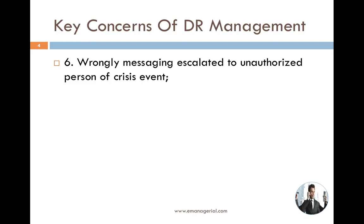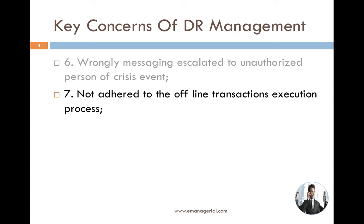The next concern is not adhering to the offline transaction execution process. When the system is not available, transactions can no longer be accessed during the recovery period. We need to activate offline transaction processing to perform transactions manually, and then wait for the system to come back up. When the system is restored, we need to clear the backlog, take all manual transactions, and repost them as part of the DRP testing scenario.